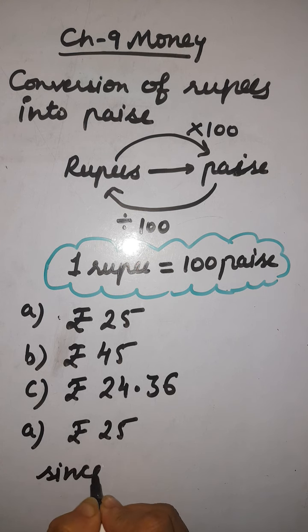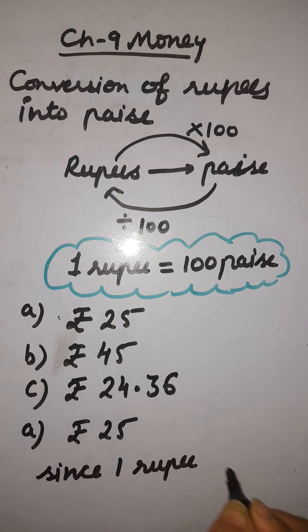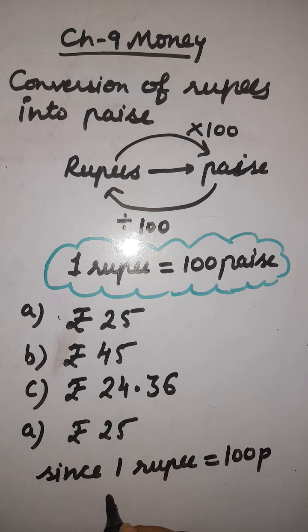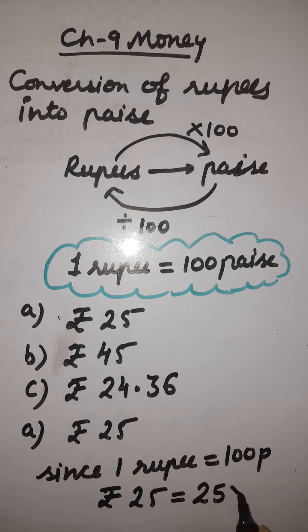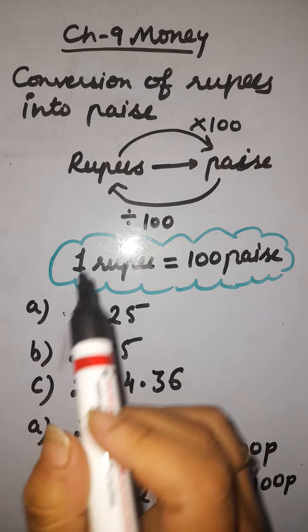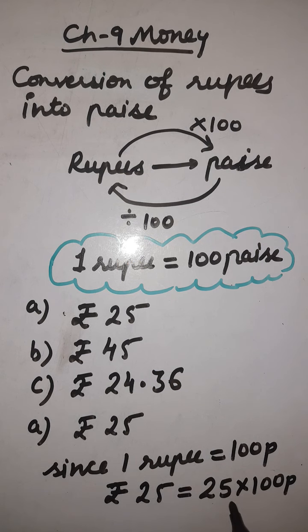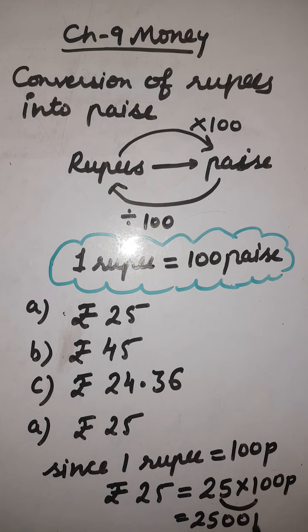Since we know that 1 rupee is equal to 100 paise, and 1 rupee has 100 paise, so 25 rupees will have: rupees 25 equals 25 multiplied by 100 paise. Because when we go from a big amount to a smaller amount, we multiply by 100. So we multiply 25 by 100: 25 ones are 25, then we put two zeros — it becomes 2500 paise.